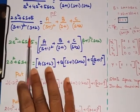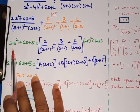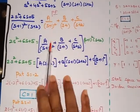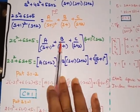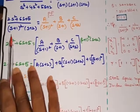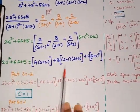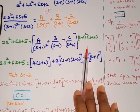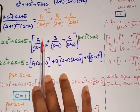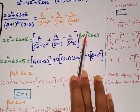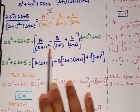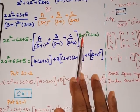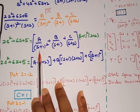The numerator 2s² + 6s + 5 equals A/(s+1)² + B/(s+1) + C/(s+2). Taking the denominator to the right side — division going to that side becomes multiplication. Now multiply each term: for A/(s+1)², multiplying by (s+1)²(s+2) causes (s+1)² to cancel, leaving A(s+2).